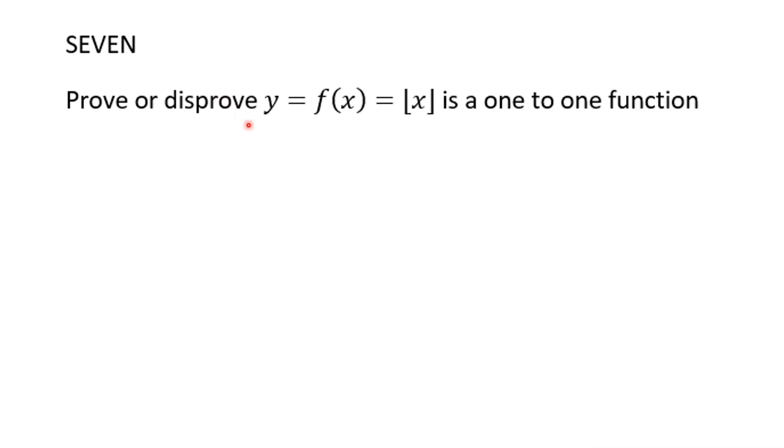Number seven, you're to prove or disprove that y equals f of x equal to floor function is a one-to-one function. Again, this was from the recent lecture from chapter 3.